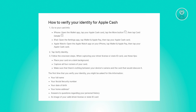The first thing you want to do is access your card information by doing the following steps. For iPhone, launch the Wallet app and select your Apple Cash card. From there, click on the more button, which is represented by three dots, and then choose card details.